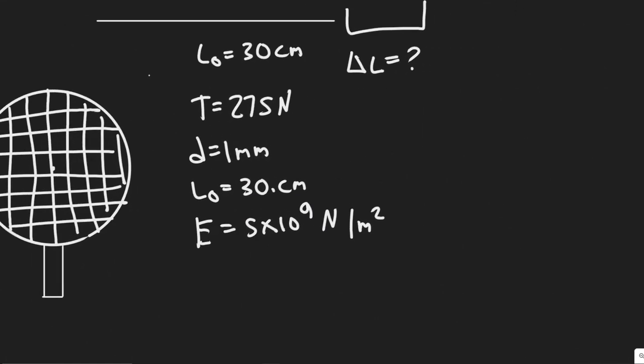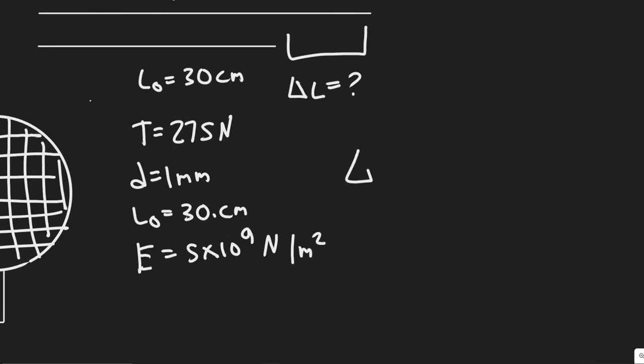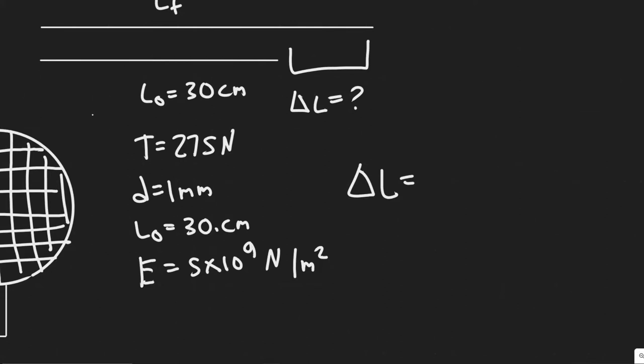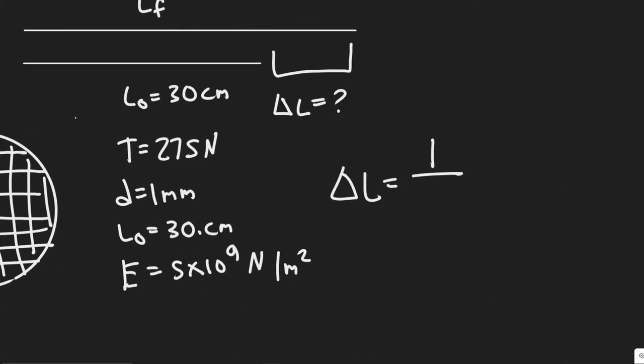So in order to do this, there's a formula you need to know, which is that delta L, or the change in length of any object, so you can imagine like a string in this case, is equal to 1 over E.